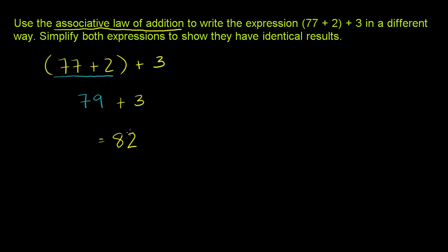That's if you just evaluated the way that they gave it to us. Now, the associative law of addition tells us it doesn't matter whether we add 77 and 2 first, or whether we add 2 and 3 first. We can associate them differently. So this is going to be the exact same thing.